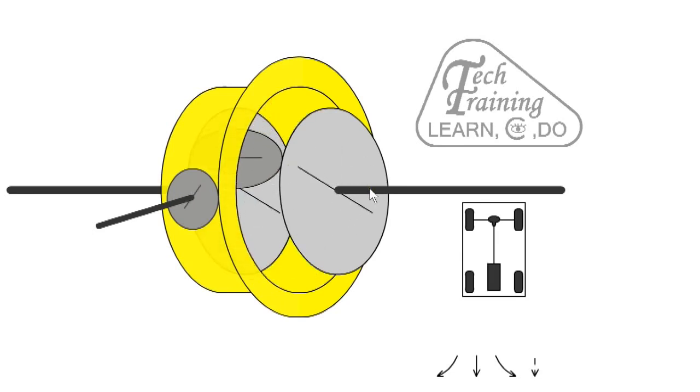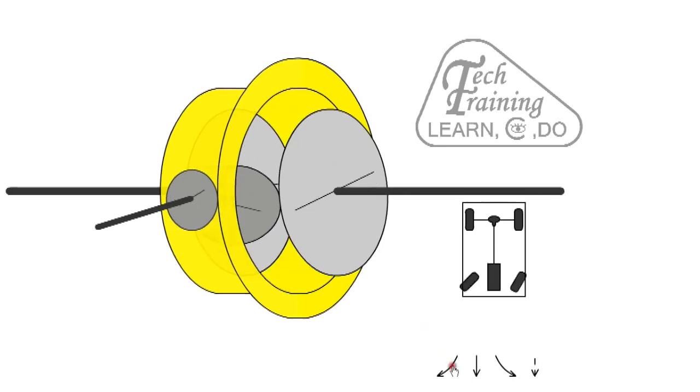When cornering, there is a difference in speed between the sun gears. The planet gear will spin on its own axis as well as revolving. One sun gear will slow down while the other speeds up. If we turn the other direction, the planet wheel will rotate in the opposite direction and again allow for a difference in speed.